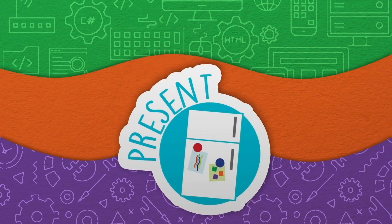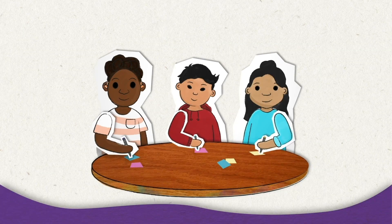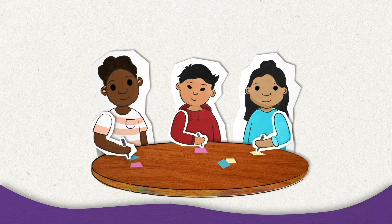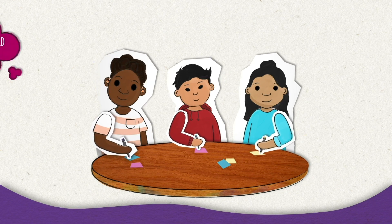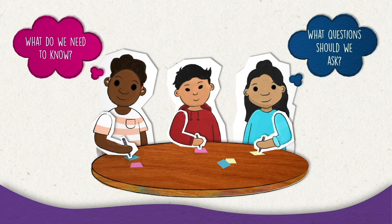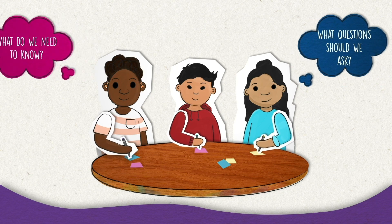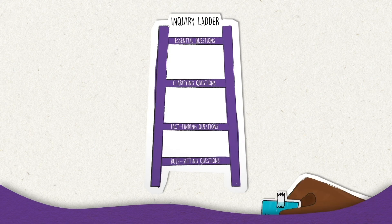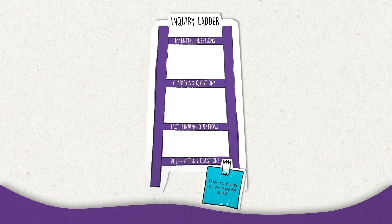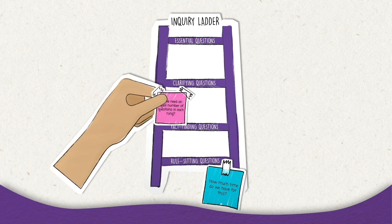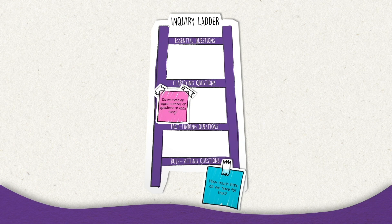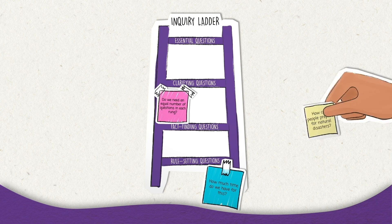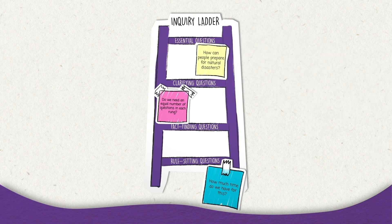Present. Write your questions on sticky notes or small pieces of paper and attach them to sections on the ladder based on type. As your team comes up with more questions, figure out where on the ladder they fit. For example, 'How much time do we have for this?' would be a rule-setting question. 'Do we need an equal number of questions in each rung?' is a clarifying question. An essential question might be, 'How can people prepare for natural disasters?'